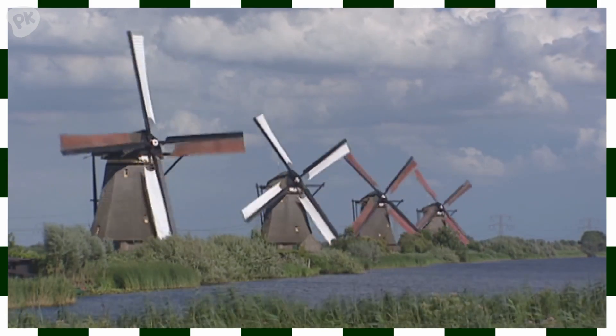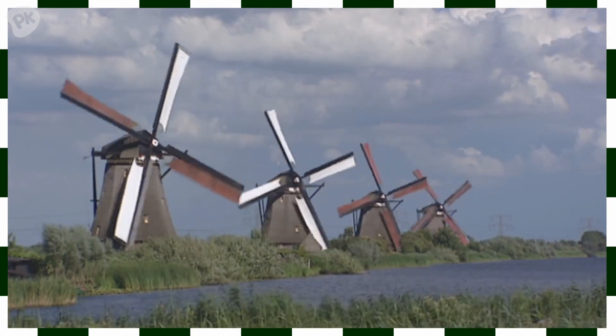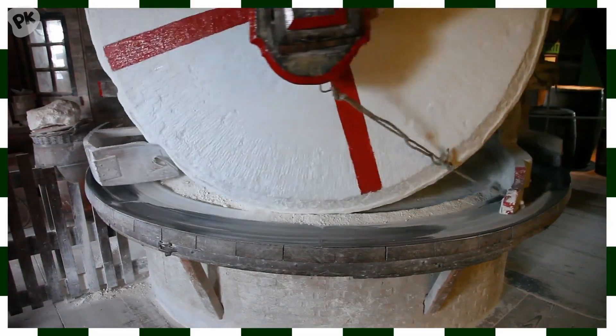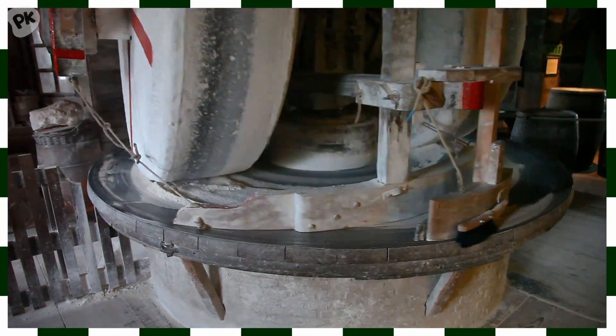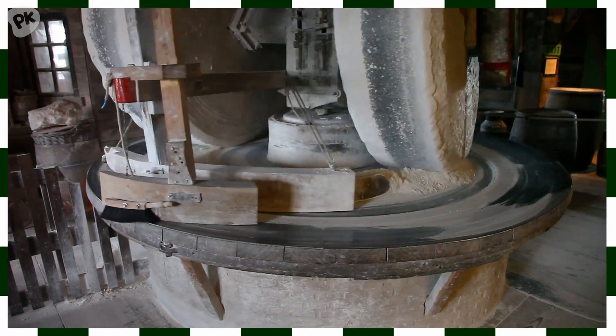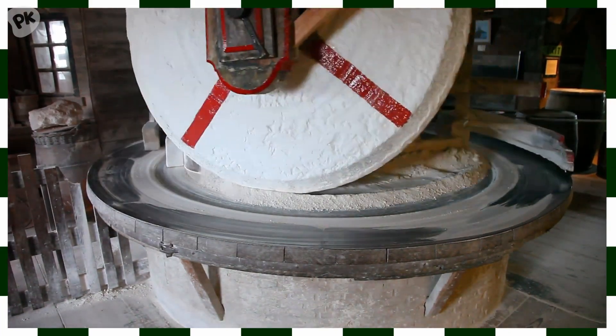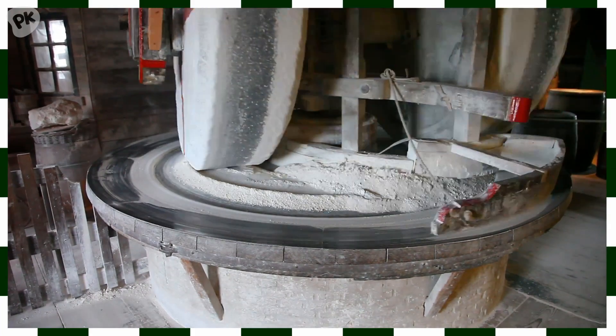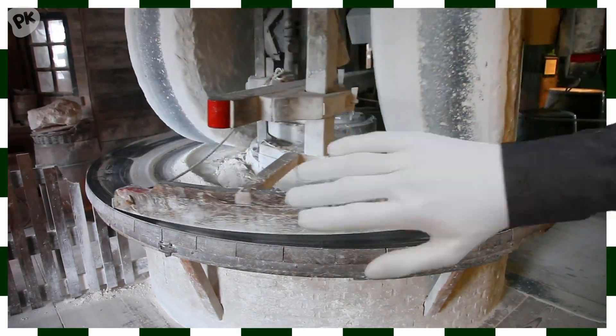And when the windmill's sails turn, it makes it so a big wheel inside turns too. Wow! The sails outside are connected to the big wheel inside. I get it! And look how that big wheel inside is helping us do work, like grinding up wheat into flour to make bread.